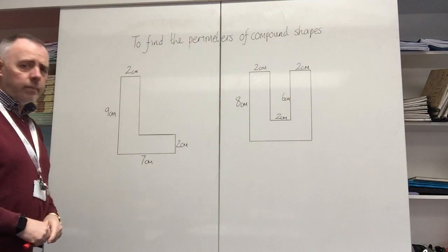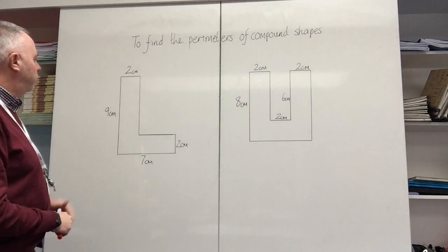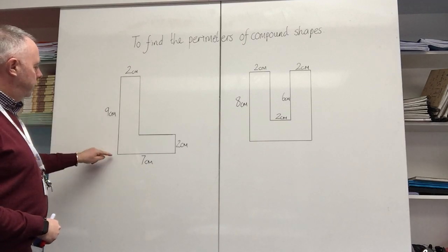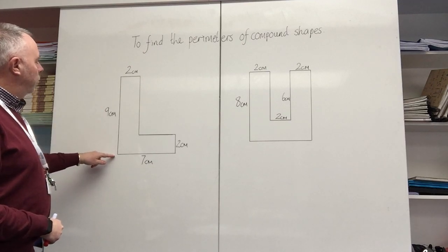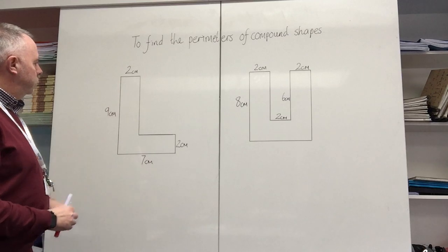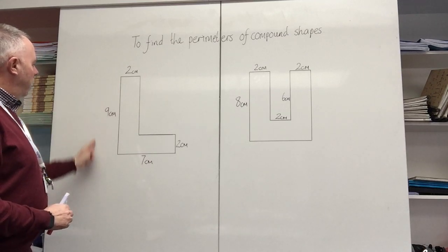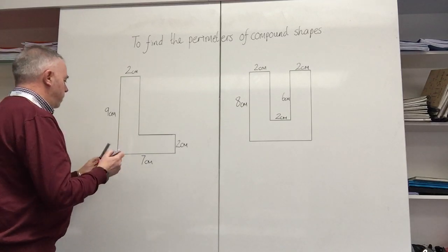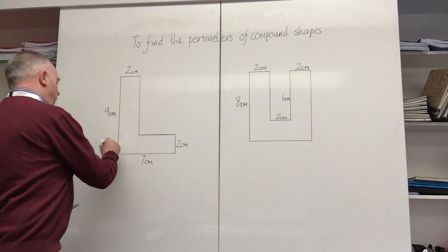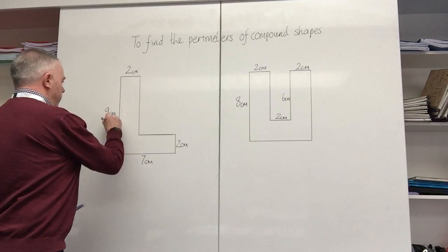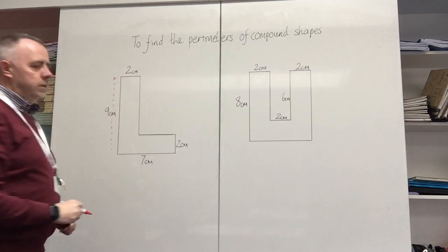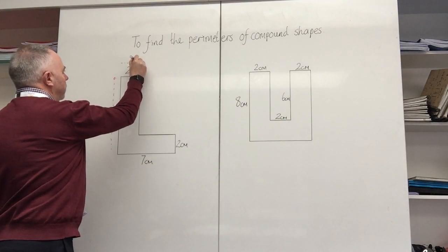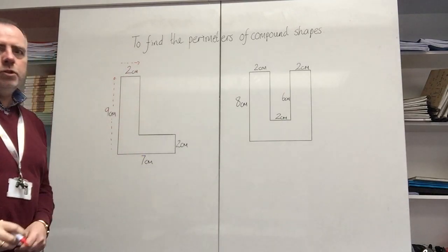If we look at this letter L first of all, we can see here that we've got a distance of nine centimeters from the bottom of the shape up to the top. So this long vertical side is nine centimeters. If we start here and measure the perimeter, going in this direction, we know that's nine centimeters, and then we go across the top of the shape and that is two centimeters.